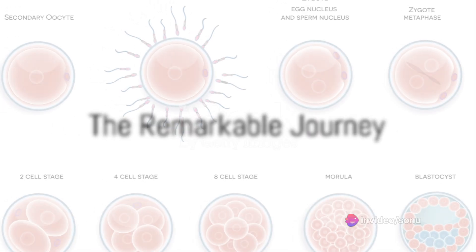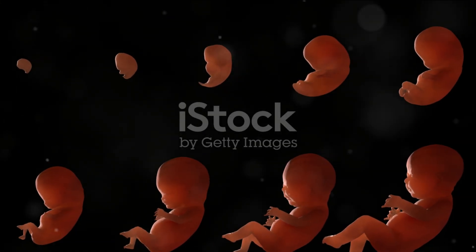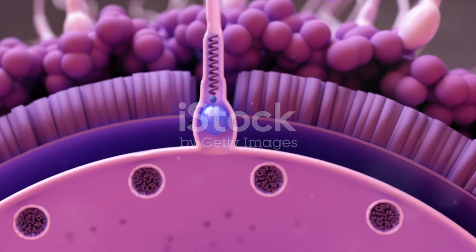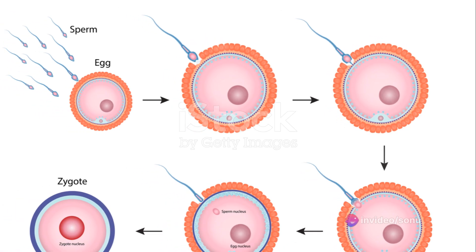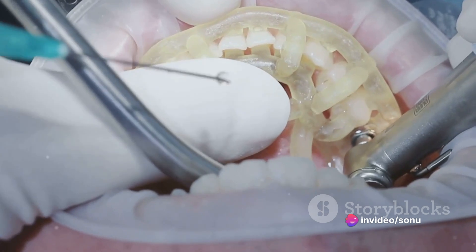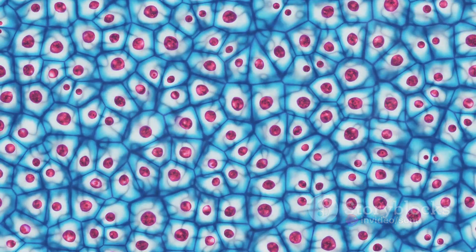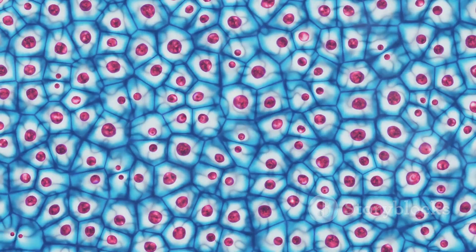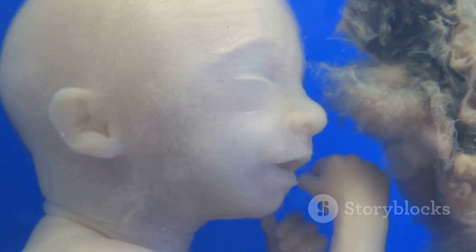To sum up, the process of embryology is a remarkable journey from a single cell to a fully formed human being. It begins with fertilization, followed by cleavage, formation of the morula and blastocyst, implantation, and the formation of the trilaminar germ disc. The final stages include differentiation of the germ layers into organs and tissues, and morphogenesis, leading to the formation of a fetus.